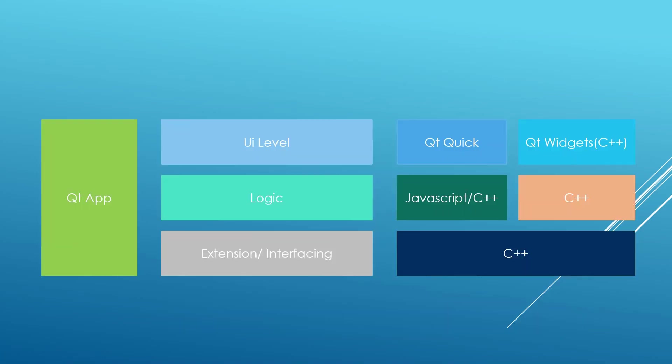If you just want to learn Qt and probably land a job later, I recommend learning both Qt Widgets and Qt Quick. The best way to start is with Qt Widgets and run your applications on desktop — this gives you the good basics you need for C++ and Qt. Once you know how to develop Qt Widgets applications, you can jump into Qt Quick, and it will be much easier to master.